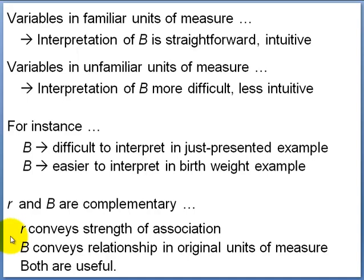r and b should be seen as complementary rather than one being superior to the other. The advantage of r is that it conveys strength of association. The advantage of b is that it conveys relationship in original units of measure, which is often helpful and preferred. In conclusion, both measures are useful and most often they're complementary.